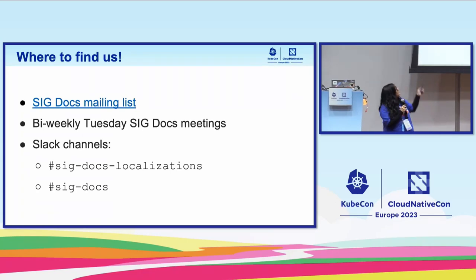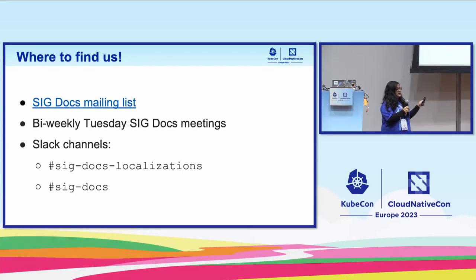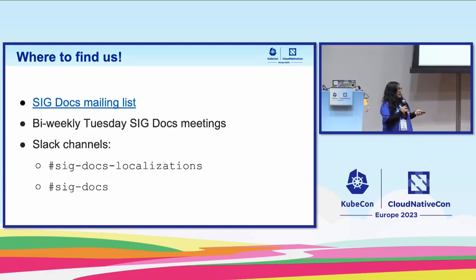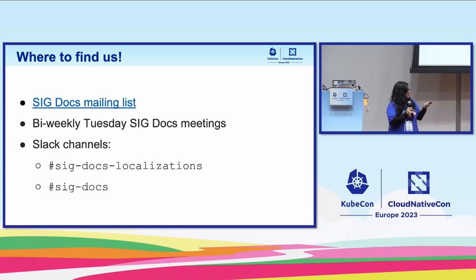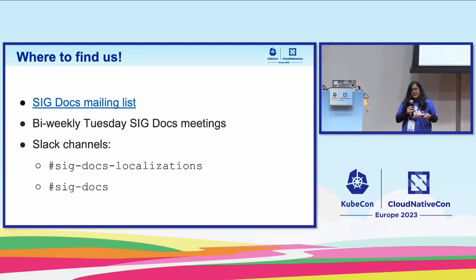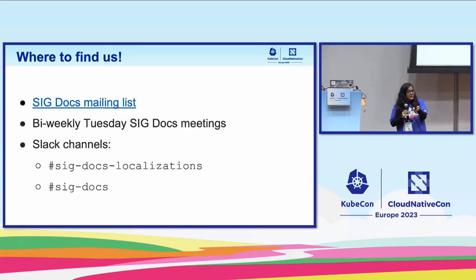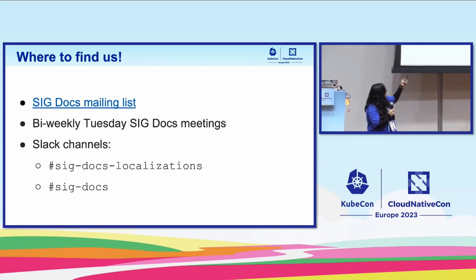You can find us on our mailing list, which is hyperlinked in the slides and will be available on the shared upload. We also meet bi-weekly on Tuesdays, though for some of us that's 11:30 PM local time. We also host an APAC-specific call, which is monthly on the fourth Wednesday of every month. The Slack channels to know are: SIG Docs Localization for the localization sub-project, and SIG Docs for the main docs website Slack channel.